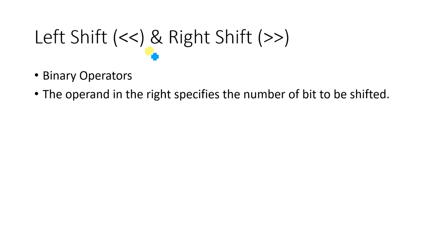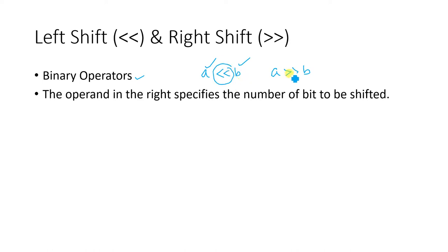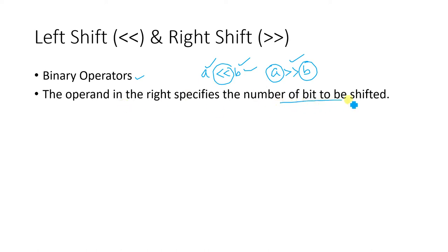These two operators are binary operators, meaning there will be two operands. For example, we can write 'a left shift b' or 'a right shift b'. So a and b are operands and the shift symbol is the operator. The operand present on the right side of the operator specifies the number of bits to be shifted.